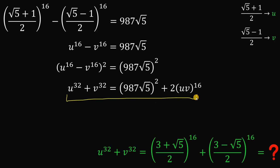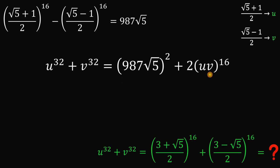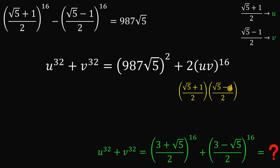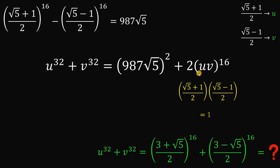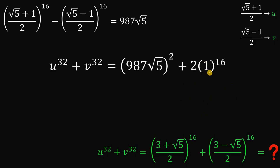We need the product uv. Computing: (√5 + 1)/2 × (√5 − 1)/2. The numerator is a difference of squares: 5 − 1 = 4, and the denominator is 2 × 2 = 4. So uv = 4/4 = 1. Therefore 2(uv)¹⁶ = 2 × 1¹⁶ = 2.